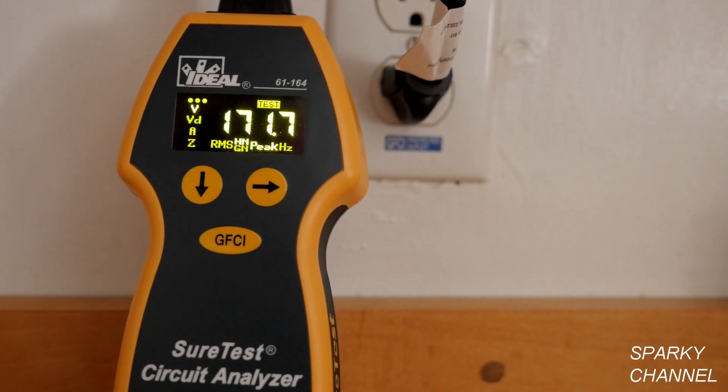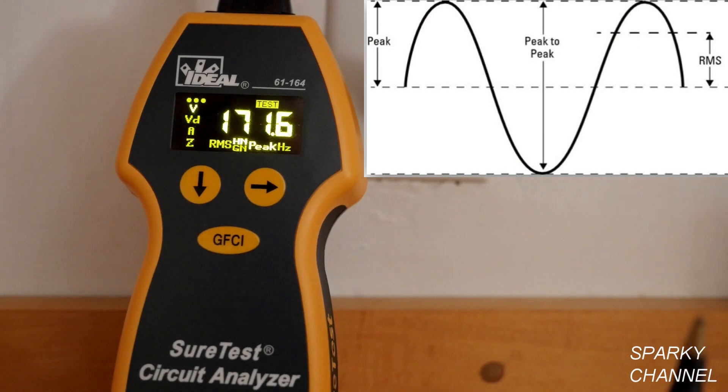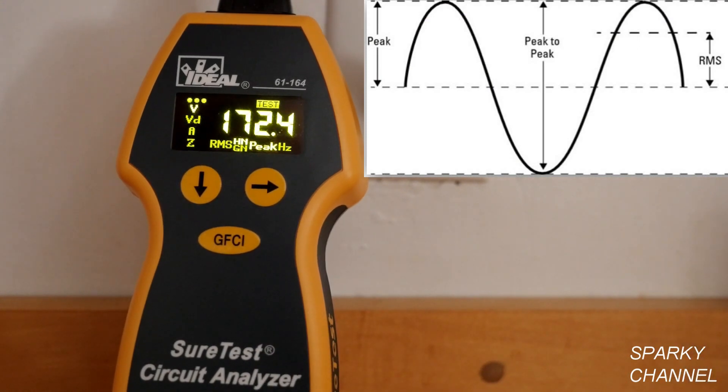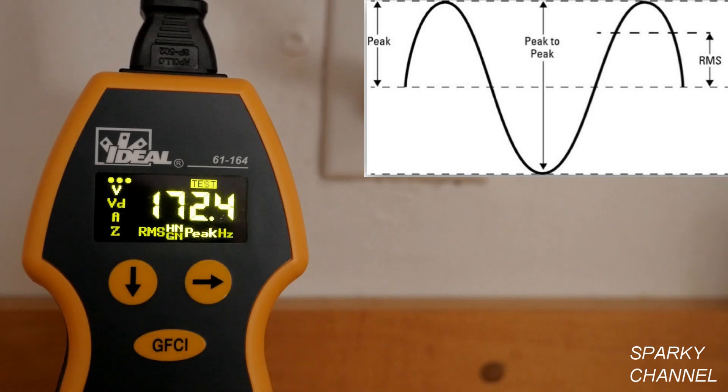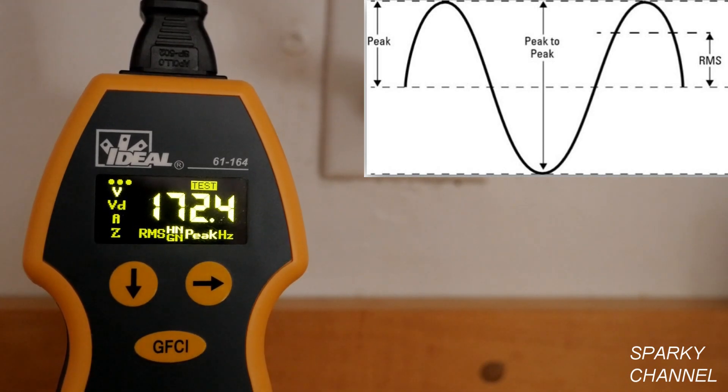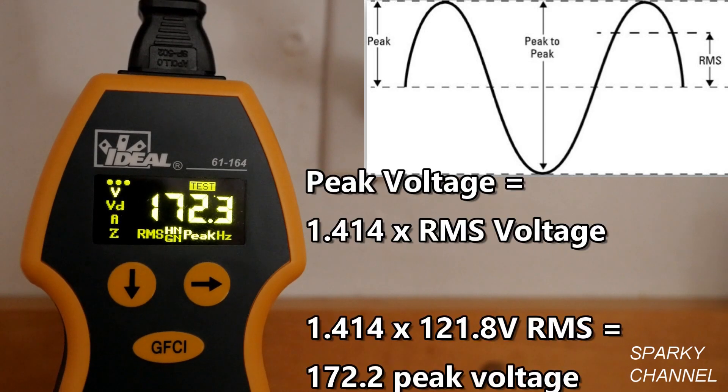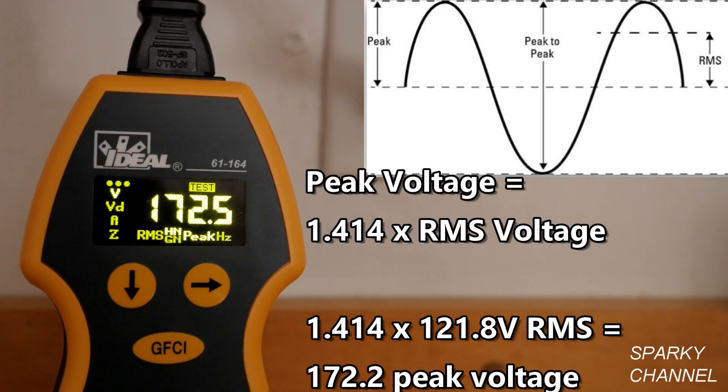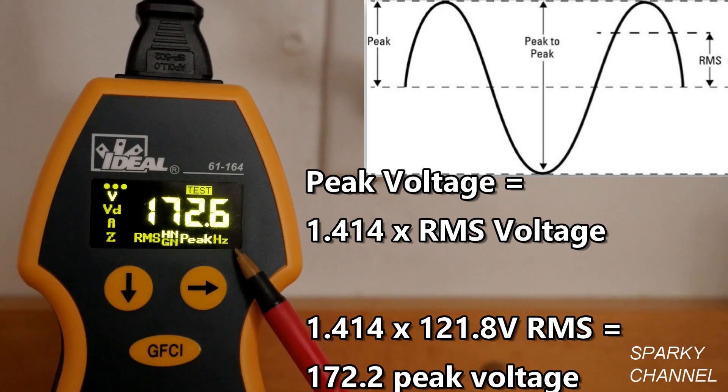This is peak voltage between the hot and the neutral. This shows you the quality of your sine wave. We're currently showing 172.4 volts, and that's about correct because the voltage we were showing was about 121.8. If you multiply that by 1.414, then it should equal about 172. This is the maximum voltage of the sine wave.